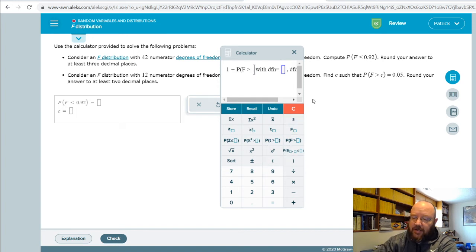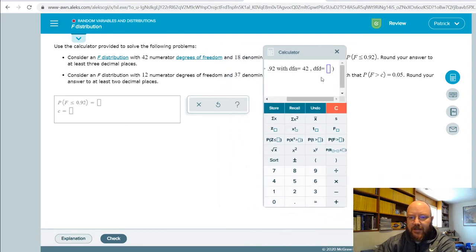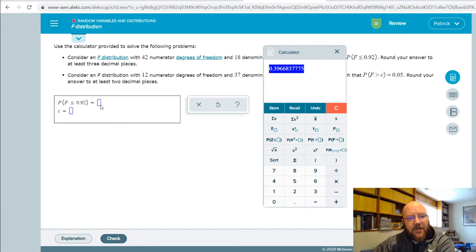But f dot 0.92 with 42 numerator degrees of freedom and 18 denominator degrees of freedom, and shazam, there you go. And so you just punch that in, and this is the probability of finding a value of f less than 0.92.